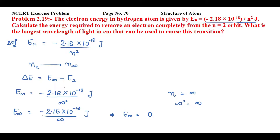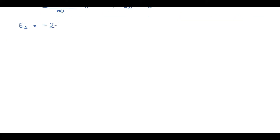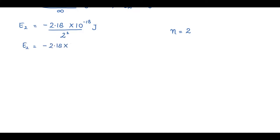Now we find the energy of the second orbit. We use E subscript n equal to minus 2.18 into 10 raised to power minus 18 by n square, with n equal to 2. So E subscript 2 equals minus 2.18 into 10 raised to power minus 18 by 2 square, that is by 4. Dividing 2.18 by 4 gives E subscript 2 equal to minus 0.545 into 10 raised to power minus 18 joule.